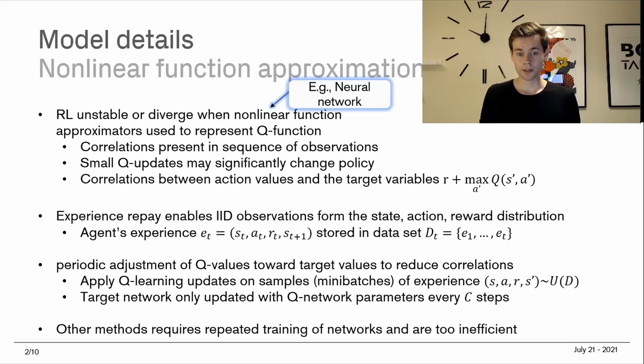Lastly, the target network is only updated with Q network parameters every C steps. We basically have a batching feature here where we update our network only on a periodic basis. This might not sound very intuitive or on a surface level would indicate that it would take longer to train the network. It's not obvious why it would help. But what it helps is to decouple the correlation between the action values and the target variables.